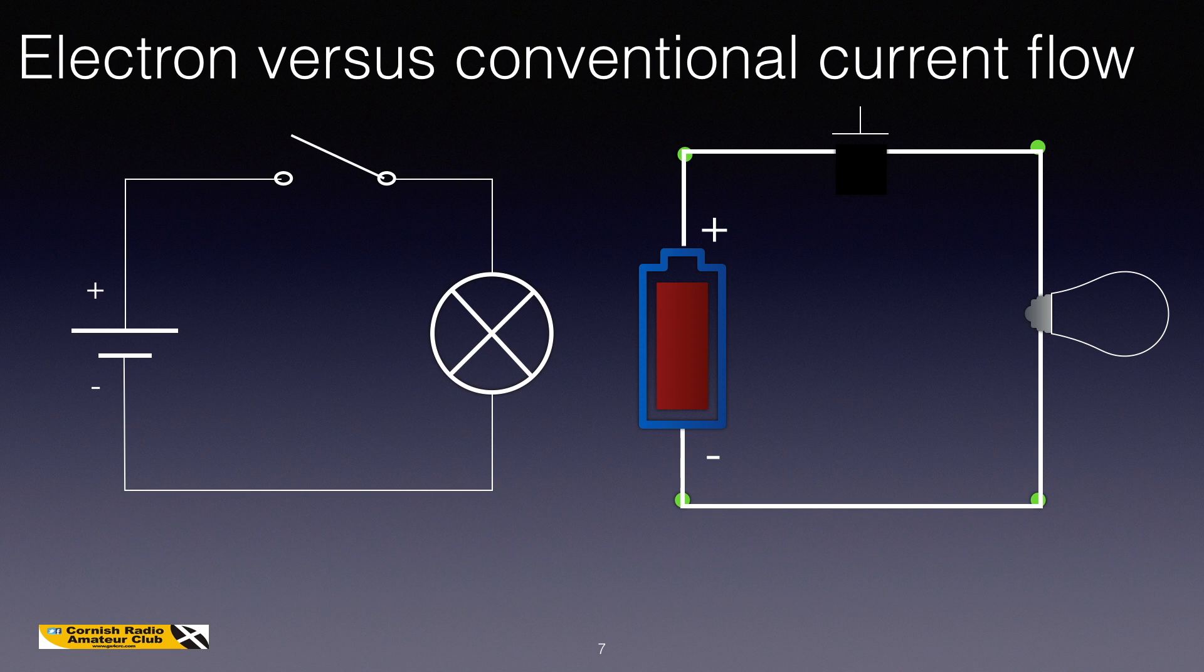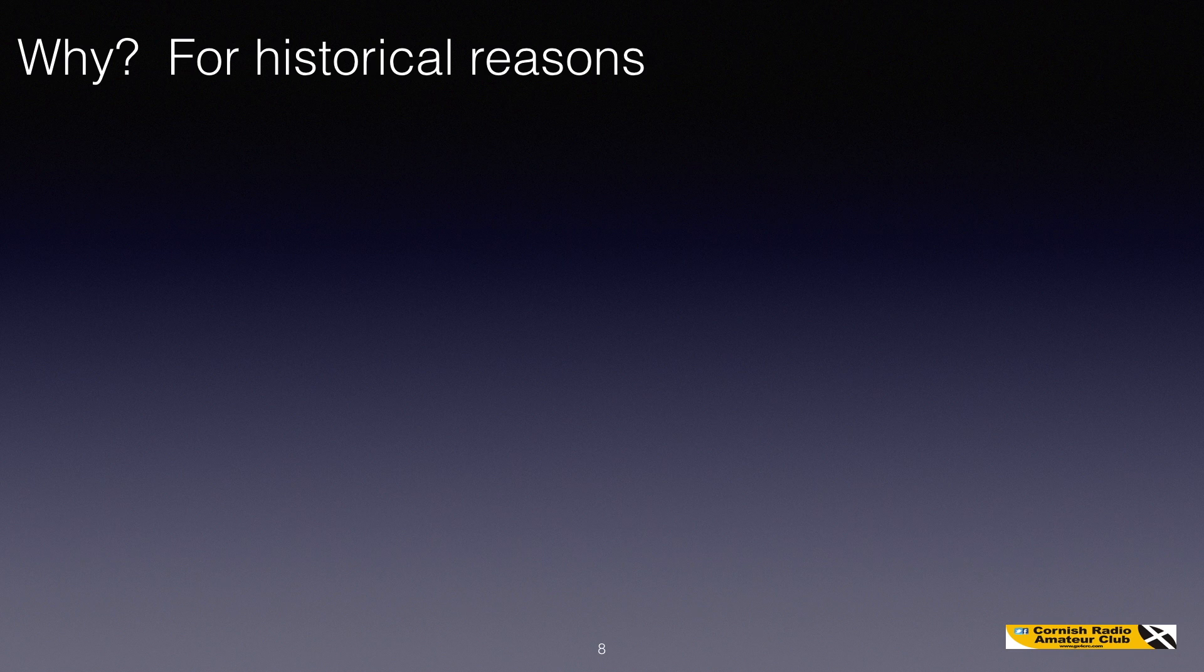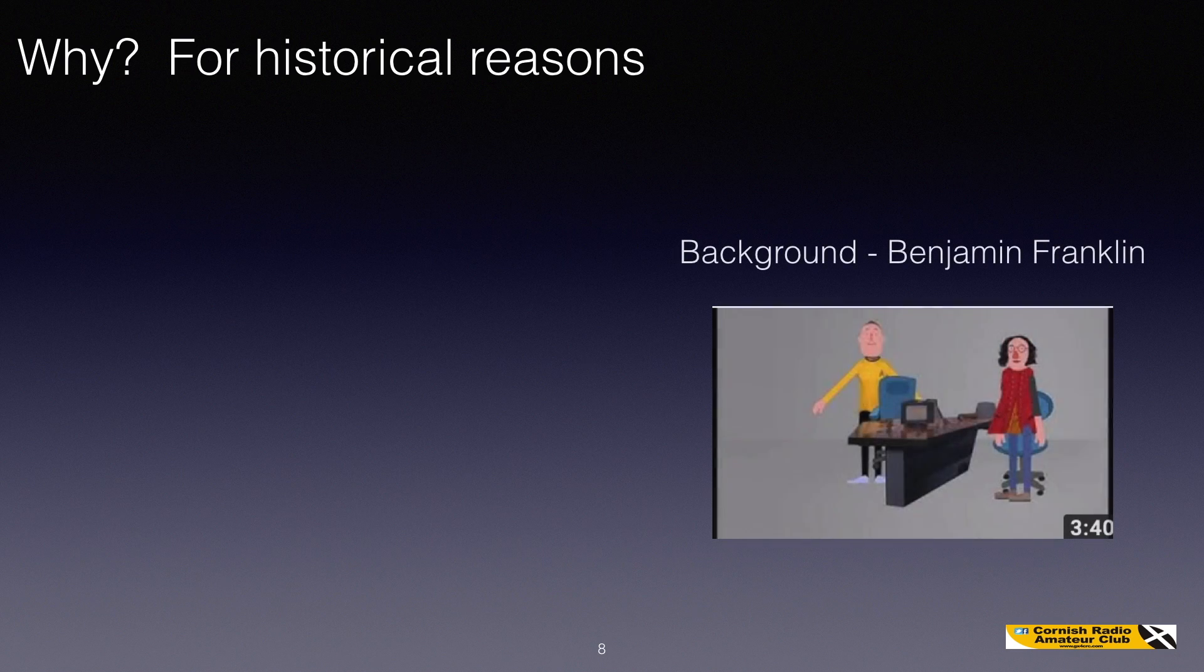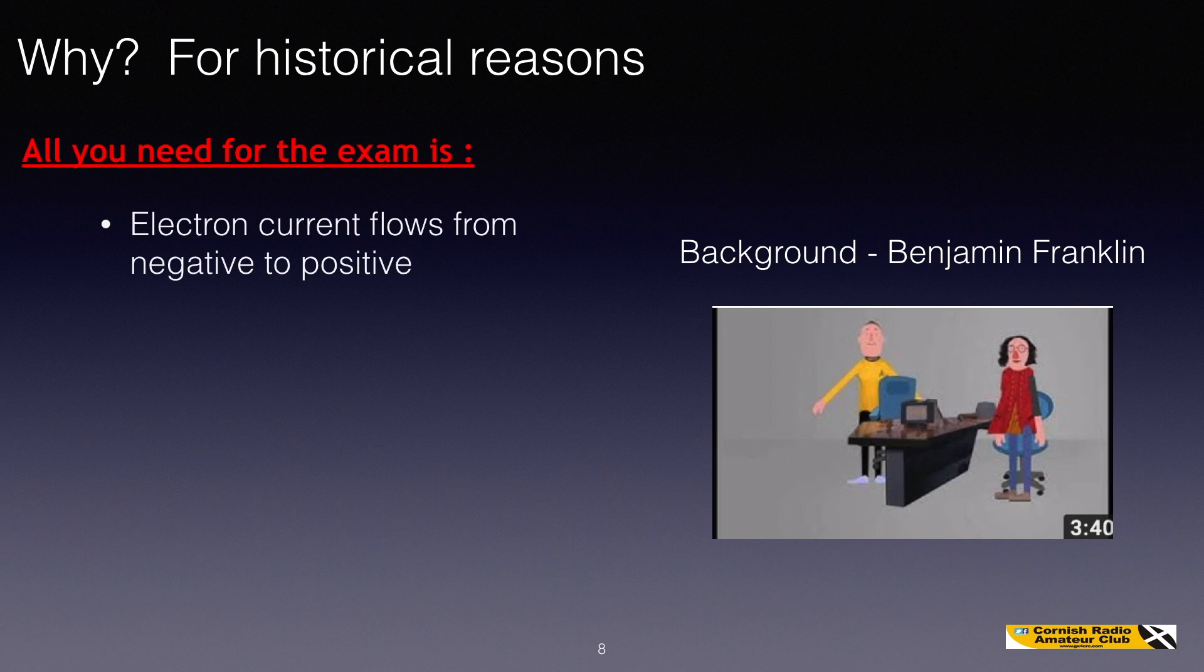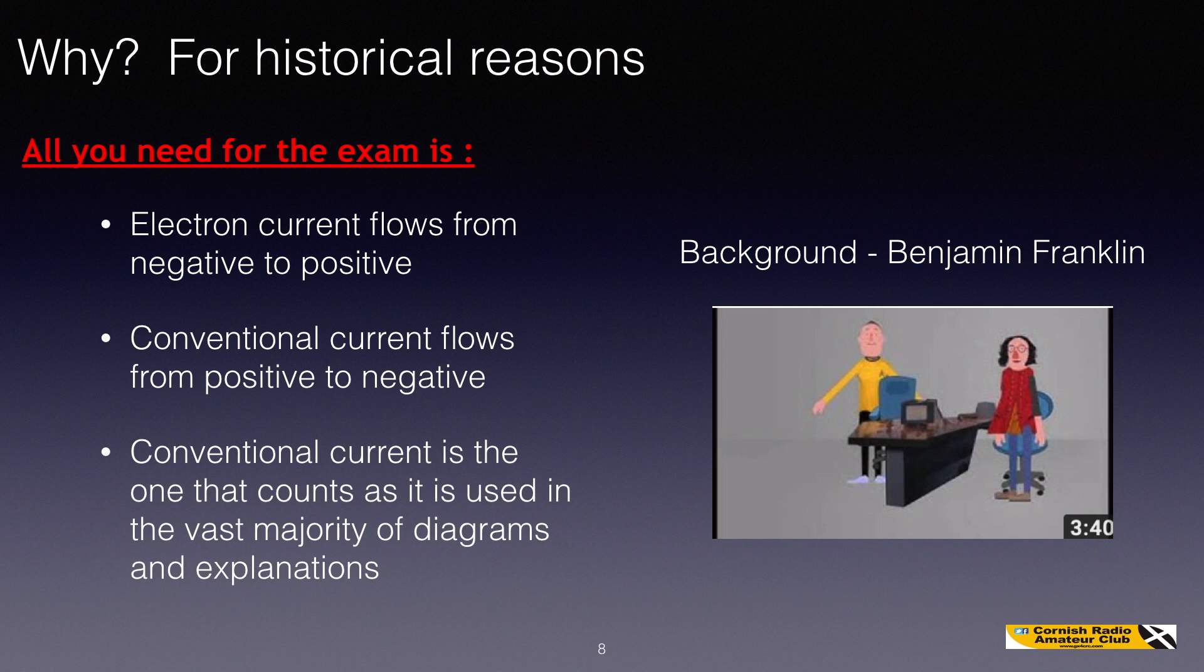Why is it like this? It's for historical reasons. There's also a little cartoon in the background series about Benjamin Franklin, a polymath that lived in America, and he's the one that's generally credited with setting the convention of what is positive and what is negative. This is all superfluous. All you need to know for the exam is that electron current flows from negative to positive, that conventional current flows from positive to negative, and that conventional current is the one that really counts, as it's used in the vast majority of diagrams and explanations.